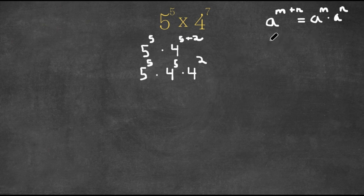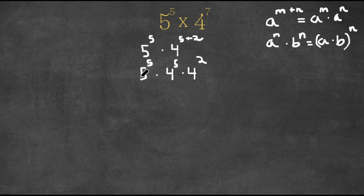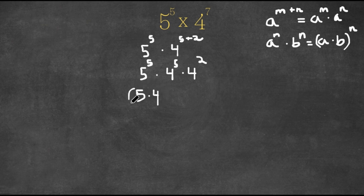Now another property of exponents is that if we have a to the power of n times b to the power of n, this is equal to a times b in parentheses to the power of n. So right here we have 5 to the power of 5 times 4 to the power of 5, where n is 5 and 5 and 4 are a and b respectively. So this can be converted to 5 times 4 to the power of 5 times 4 squared.